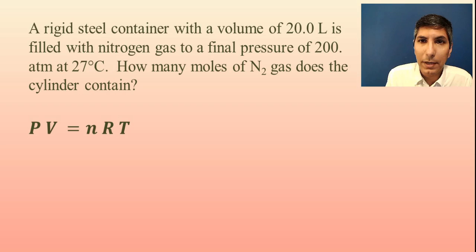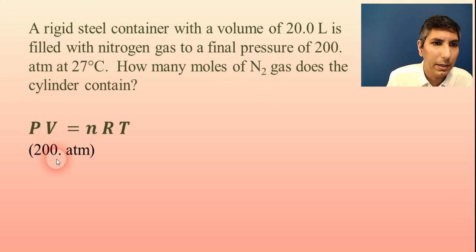So we're going to use PV equals NRT, and we're going to plug and chug. Now P is for pressure. So notice that unlike the gas laws we had in the last video, we're not changing anything. There's no initial pressure and final pressure. It's just pressure. So it tells us right here that the pressure is 200 atmospheres. So we're going to plug that in for P.